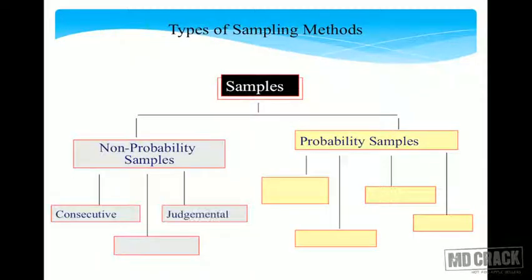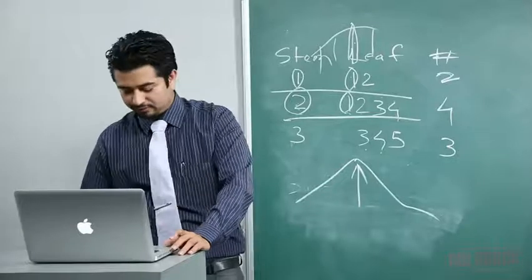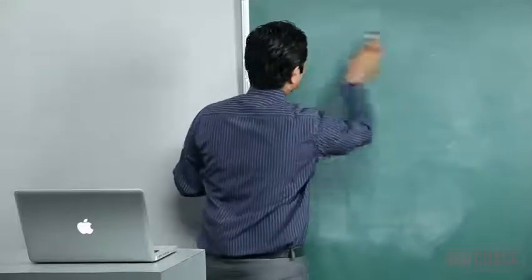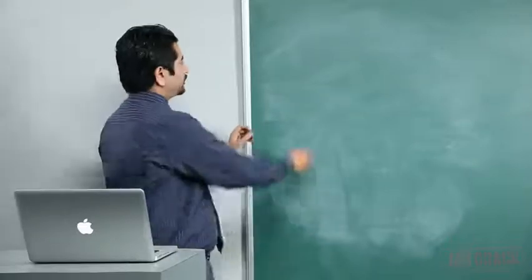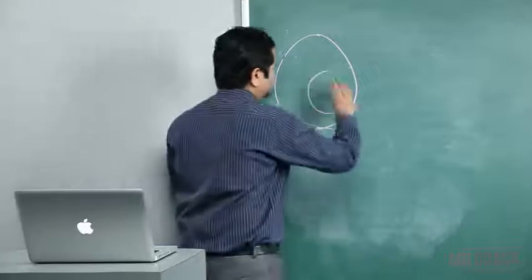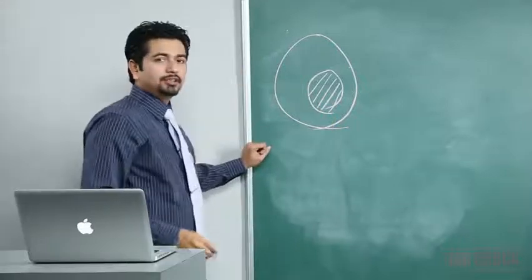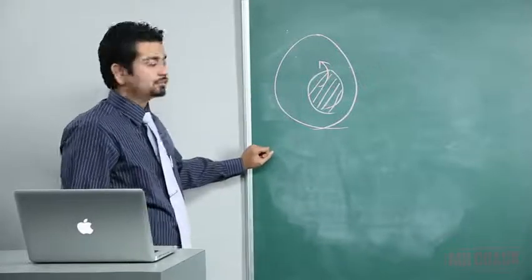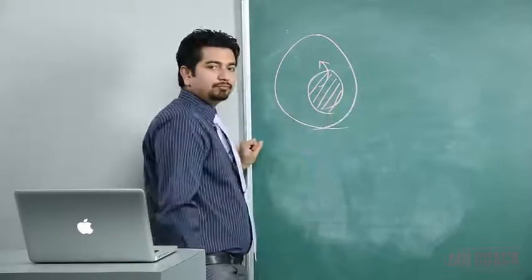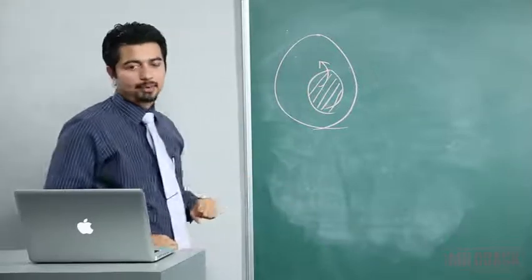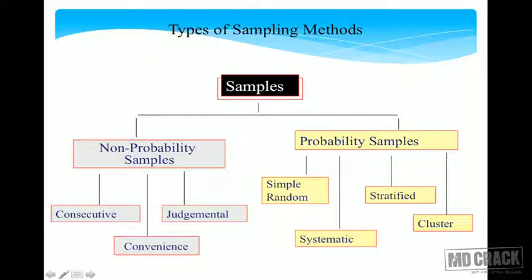Moving on to sampling: if I want data from a population, I cannot go to each and every household in the community, so I take a representative sample. I take a small sample from the population, collect data on these people, and then extrapolate the data to the population. For example, to know the height of people in India, I sample people from all over India and extrapolate based on the sample.